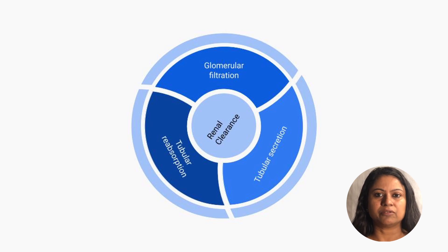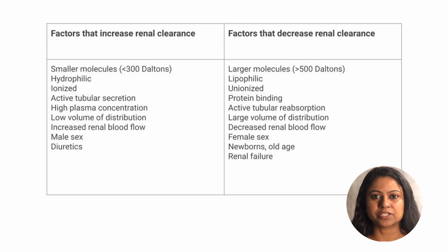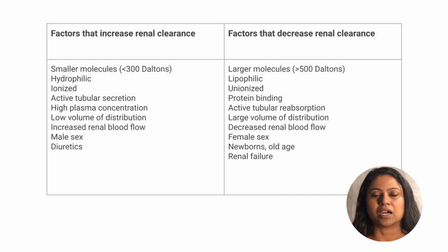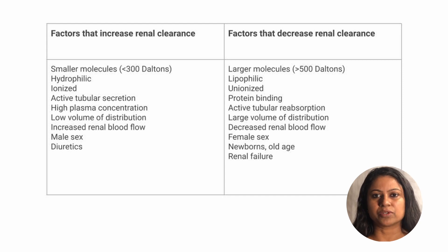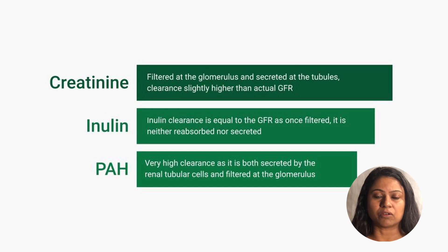Renal clearance is mainly affected by three factors: glomerular filtration, tubular reabsorption, and tubular secretion. Any factor that changes either of these will have an effect on the renal clearance. This slide gives the many factors that have an effect on renal clearance. Important among them are size, state of ionization, protein binding, and presence of renal disease.